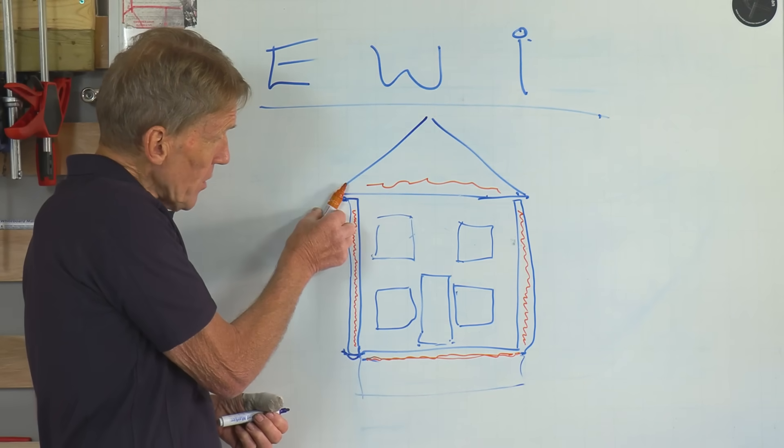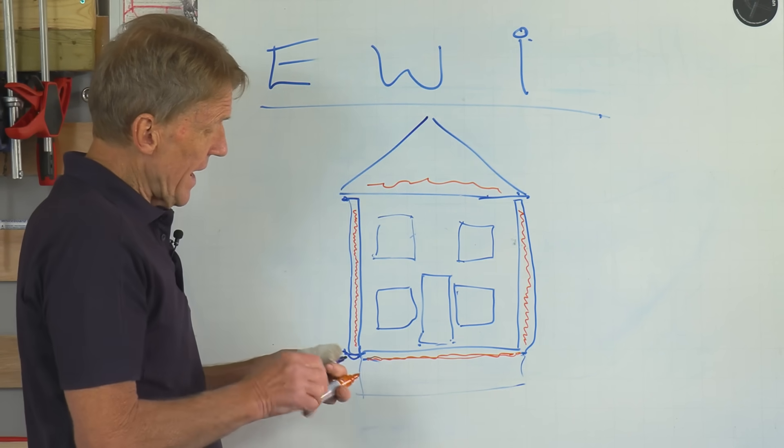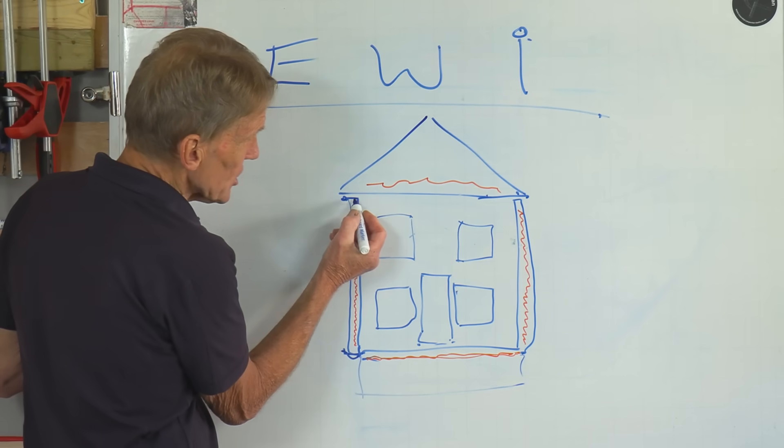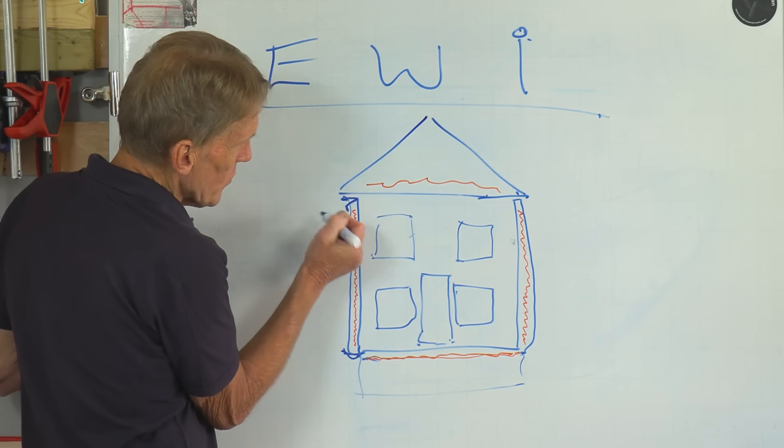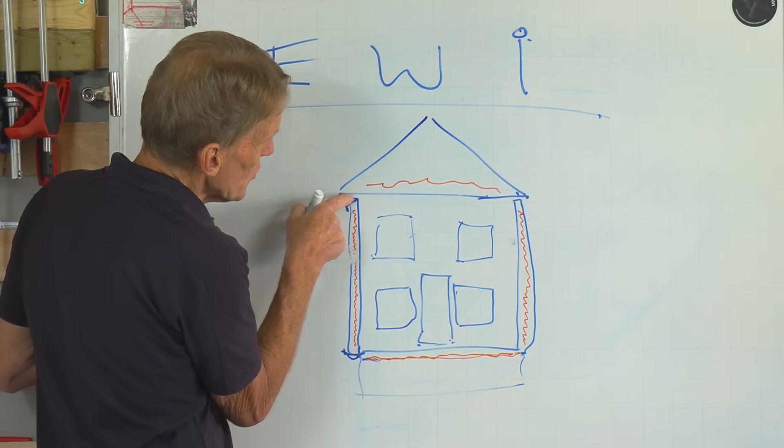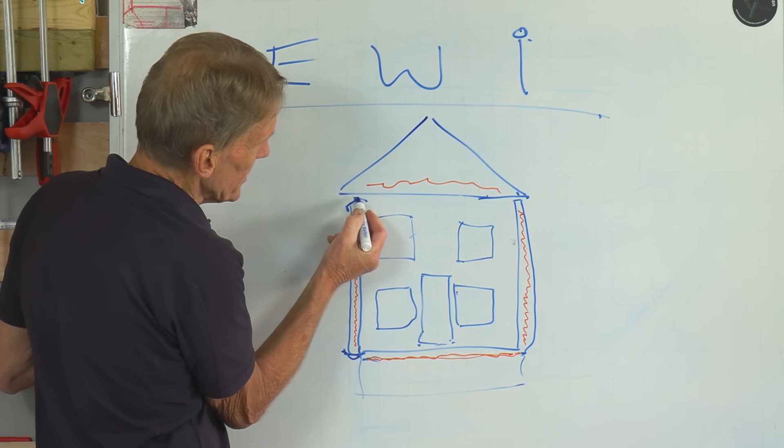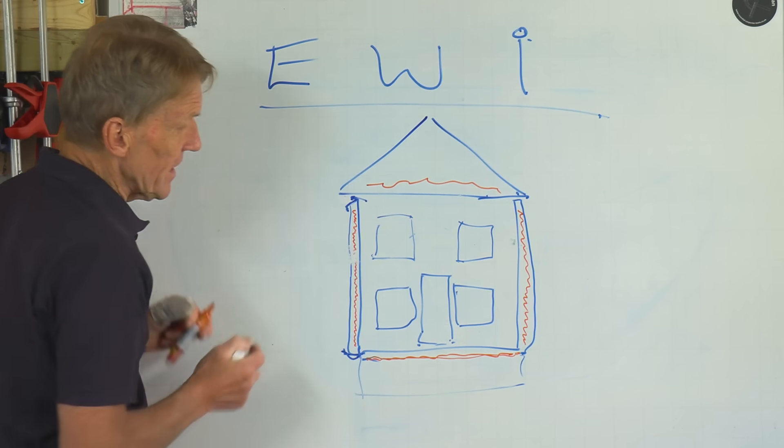Sometimes they have to do a bit of jiggery-pokery to make that work, and how they very often do it is just with a kind of a capping piece like that, an angled capping piece. So you do find that just about in this area here, you don't have any insulation.